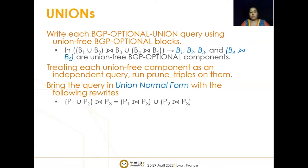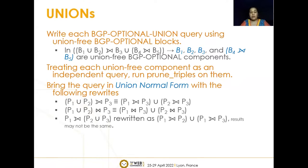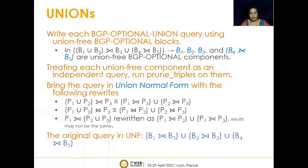After running prune triples, we bring the query into what is called union normal form using the following rewrite rules. The first rule: a union of two patterns left outer joined with another pattern is equivalent to a union of the individual left outer joins. The second: unioning two patterns then inner joining with another is equivalent to the union of individual inner joins. The third rewrite rule does not ensure equivalence of results, but we discuss how it can still be used. So P1 left outer join (P2 union P3) is rewritten as (P1 left outer join P2) union (P1 left outer join P3). Using these three rules, the example query is rewritten as: B1 left outer join B3, union B2 left outer join B3, union B4 left outer join B5.